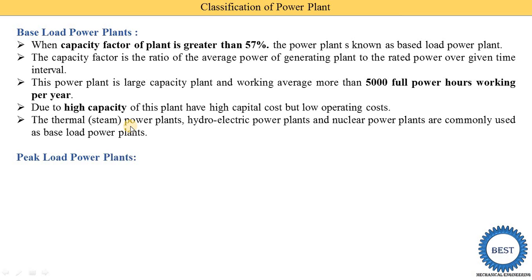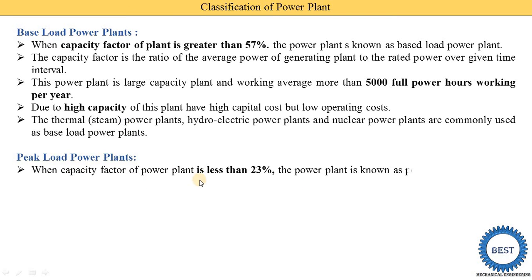The second type is the peak load power plant. When the capacity factor of the power plant is less than 23%, the power plant is known as a peak load power plant. In a base load plant the criterion is 57%, whereas in a peak load plant it is less than 23%.